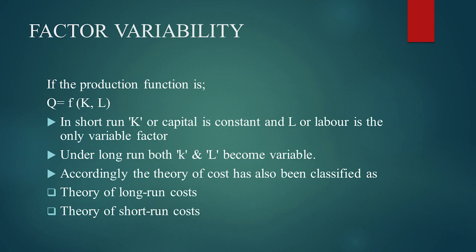In the short run, capital does not vary. Capital remains constant, but labor is increased or decreased, so labor becomes the variable factor. In the long run, capital also becomes variable. But in the short run, capital is not varied — whatever is plant, machinery, or equipment, that is not going to be changed. It is only labor which varies, and varying amounts of labor give rise to three situations: increasing returns, constant returns, and diminishing returns.